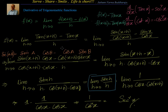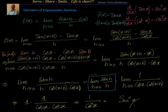Let me summarize. We found the derivative of tan x by first principles. The first principle formula is the average rate of change — the change in the function with respect to the change in the domain: [f(x+h) - f(x)] / h. With f(x) = tan x and f(x+h) = tan(x+h), converting tan into sin/cos gives us sin(a-b) in the numerator. Simplifying yields sec²x.